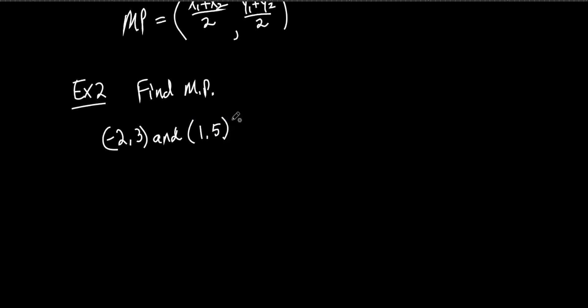We've got a formula now, so we don't have to draw it out or count over and up. We can just use the formula. If you want to label the points, you can — especially when you first start. This negative two and three is our first point. So that's X1 and Y1. And then the second point, one and five, is X2 and Y2.